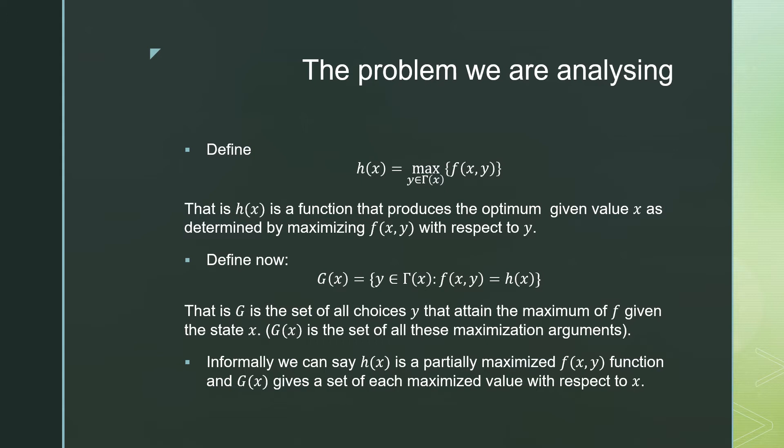Define now g(x), which is defined as the set of all choices y that obtain a maximum f given the state x. That is, g(x) is the set of all of these maximization arguments that could possibly exist for each y. Informally, we can say h(x) is a partially maximized f(x, y) function and g(x) gives us a set of maximized values with respect to x.